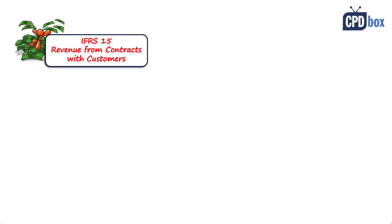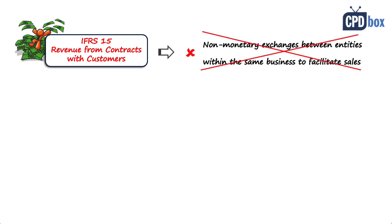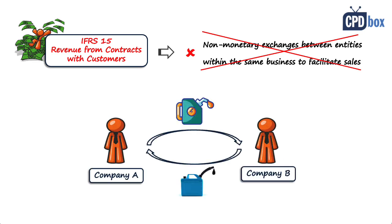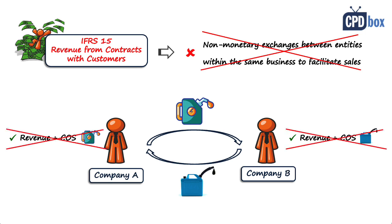It is true that IFRS 15 specifically excludes non-monetary exchanges between entities in the same line of business to facilitate sales to customers or potential customers. The standard gives an example of two oil companies that agree to an exchange of oil to fulfill demand from their customers in different locations. The reason IFRS 15 excludes such transactions is that recognizing revenue would just gross up expenses and revenues, which is not appropriate when the same company acts as both supplier and customer of the same homogeneous product at the same time.